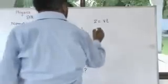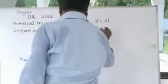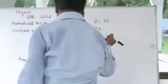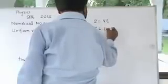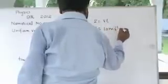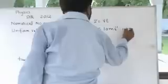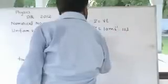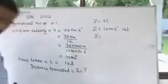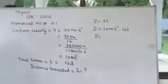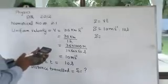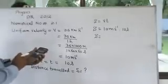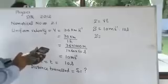Putting the value of V and t inside this equation: s equals V equals 10 meters per second, time equals 10 seconds. So distance travelled is equal to 100 meters.